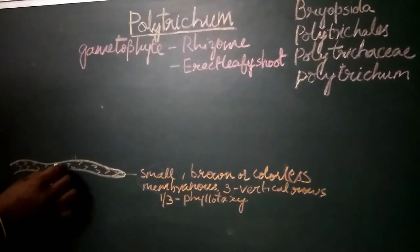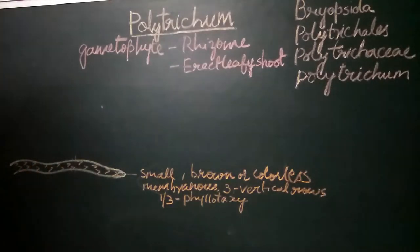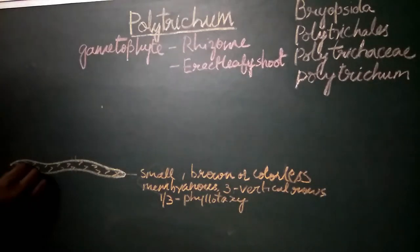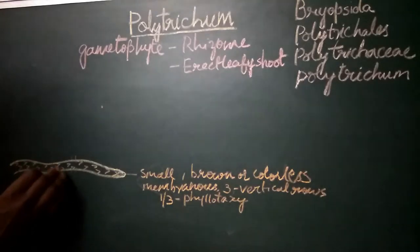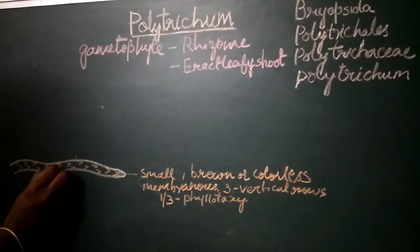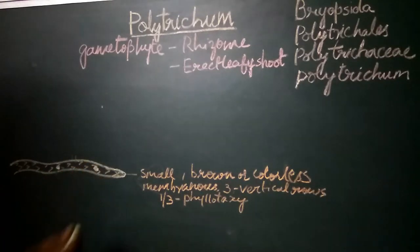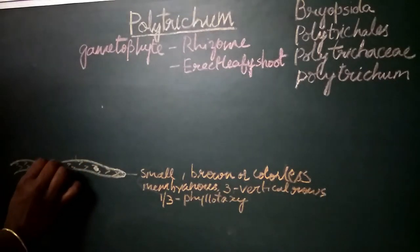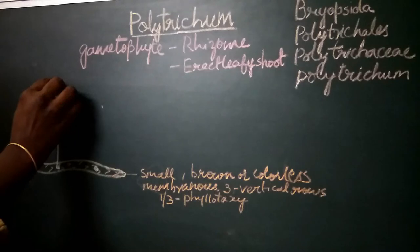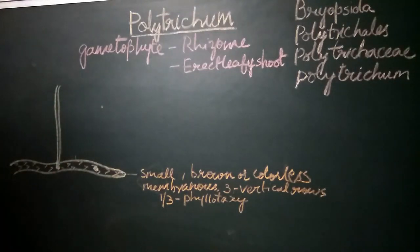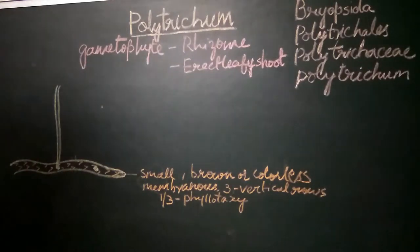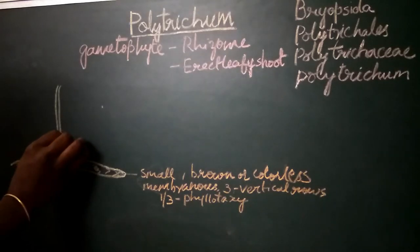The leafy shoot arises from structures called primordia. At the base of every twelfth leaf there is a primordia which grows into an erect structure. This aerial erect structure forms the leafy shoot of Polytrichum, and is differentiated into two parts.